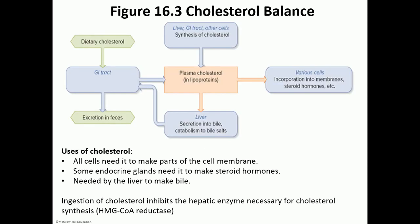What about cholesterol? We usually think of it as bad, but there are certain functions that require a little bit. All of our cell membranes were made out of bilayers of phospholipid with scattered cholesterol molecules that gave the membrane its structure. Some endocrine glands make steroid hormones, and all steroid hormones are cholesterol-based. The liver also needs cholesterol to make bile.